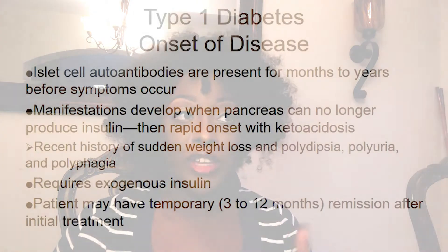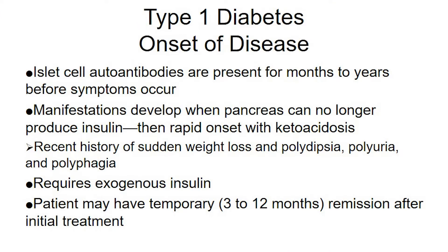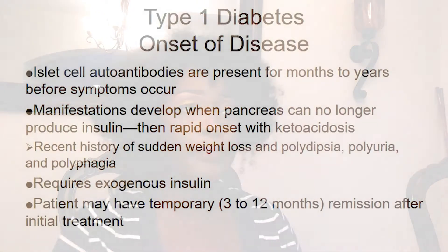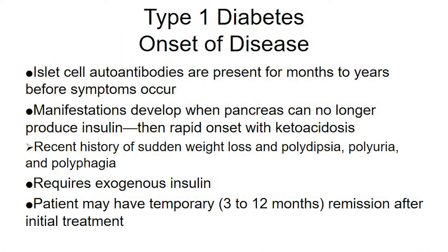The onset of disease: the islet cell antibodies are present from months to years before symptoms occur. We're talking about Type 1 here — we know it's Type 1 because of the islet cell antibodies. Remember, Type 1 is the autoimmune disease where the patient's own body creates antibodies and either doesn't secrete insulin or doesn't make it in amounts that would keep them alive.